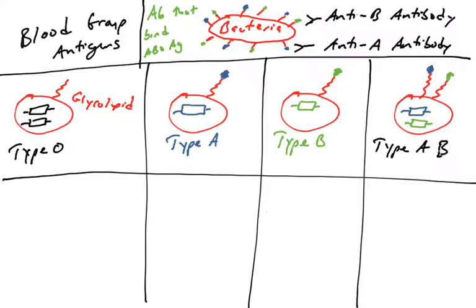All people are exposed to these commensal bacteria, so we all have the potential to generate anti-A and anti-B antibodies — but not all of us do. A type O person, when infected by this bacterium, will see both the type A glycolipid and the type B glycolipid as non-self molecules, because a type O person does not have either the type A or the type B antigen on their cells.